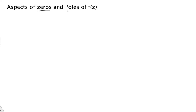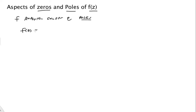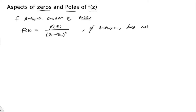Today we're going to be talking about aspects of zeros and poles of f(z). We have functions that are analytic except at poles — these isolated singularities. On the opposite side, we know that functions analytic except at poles can be characterized: f(z) can be expressed by some function which is analytic and non-zero at a point z-naught.